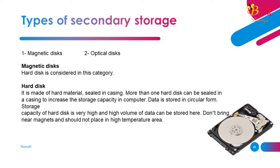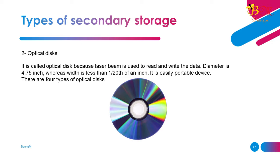Magnetic discs: Hard discs are in this category. A hard disc is made of hard material sealed in a casing. More than one hard disc can be sealed in a casing to increase storage capacity. Data is stored in circular form. Storage capacity of a hard disc is very high and high volumes of data can be stored. Hard discs should not be brought near magnets and should not be placed in high-temperature areas.